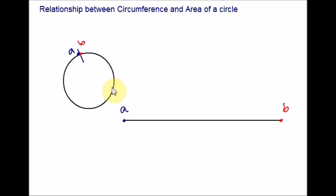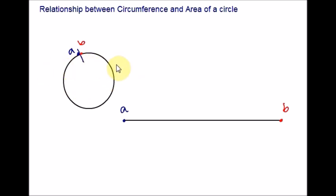The diameter of the circle is a line segment from one point on the edge of the circle to another point on the edge that passes through the center. It is the longest line segment that cuts across the circle. There are many different diameters, but they all have the same length.